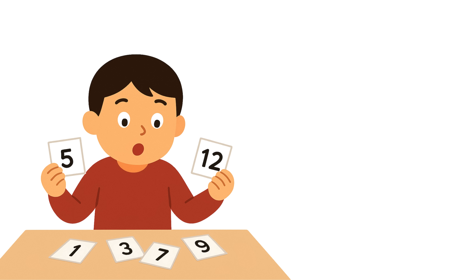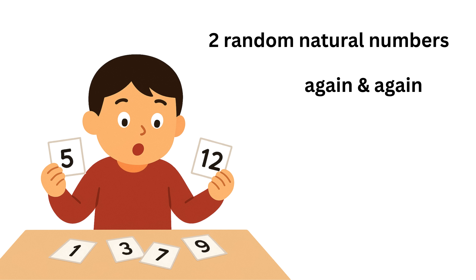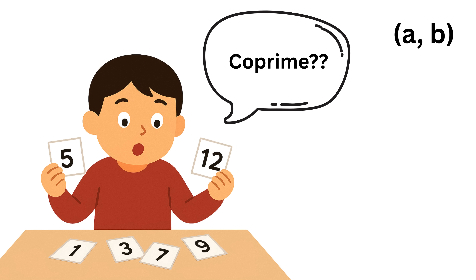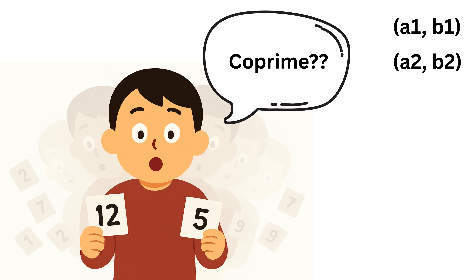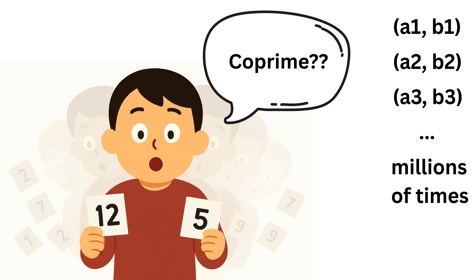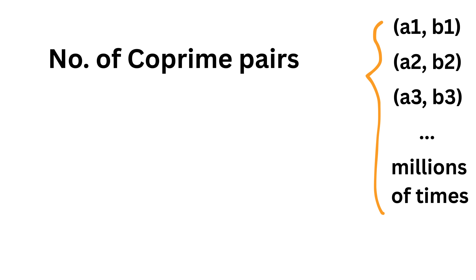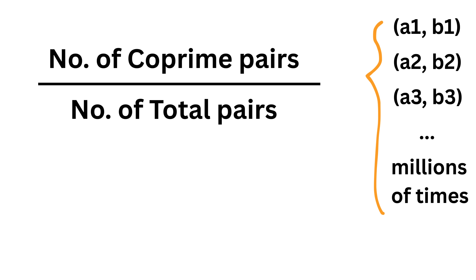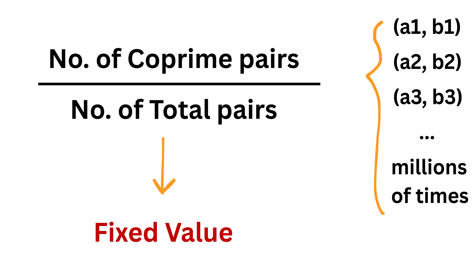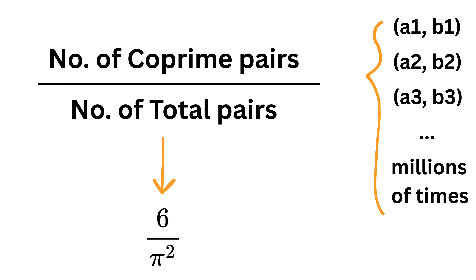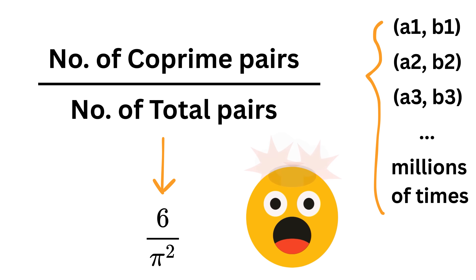Now imagine you start an experiment where you keep picking two random natural numbers, say a and b. For each pair you check whether they are co-prime or not. If you repeat this process thousands or millions of times, something very surprising happens. Euler showed that if you divide the number of pairs that turn out to be co-prime by the total number of generated pairs, this number slowly settles down to a fixed value.